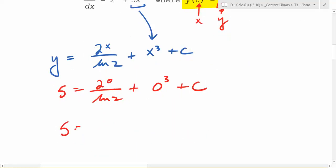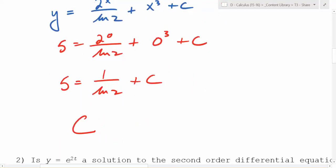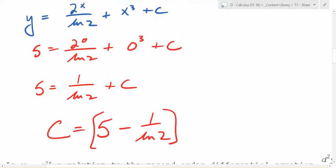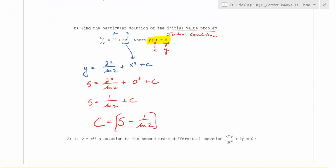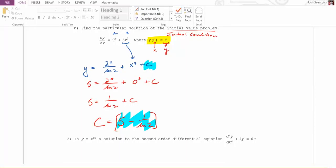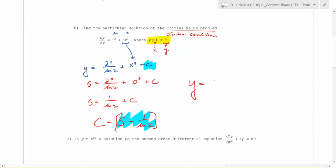Well, what's 2 to the 0? Come on. You know what 2 to the 0 is. 1. So it's 1 over ln(2) plus c. So what does c equal? 5 minus 1 over ln(2). So even though that's not optimal, is that still just a number? Yeah. This is your c value. This right here is your c value right there. So you would say that y is equal to 2 to the x over ln(2) plus x cubed plus 5 minus 1 over ln(2). That would be your final answer right there.